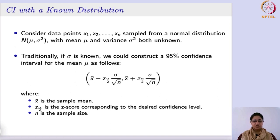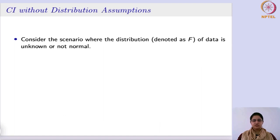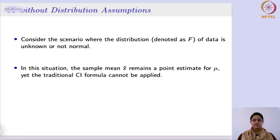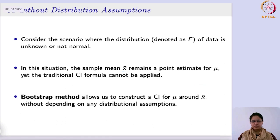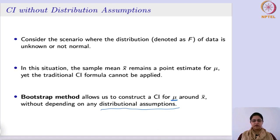In certain situations, the distribution from which the data is taken is unknown or may not be normal. In that situation, the sample mean still remains the point estimate, but we do not know what the confidence interval estimate will be, because confidence interval estimates are built around the sample mean. In such cases, the traditional confidence interval formula cannot be applied. Instead, we use the bootstrap method, which allows us to construct a confidence interval for the population mean or any other population parameter without depending on any distributional assumption, yet still find the 95% confidence interval.